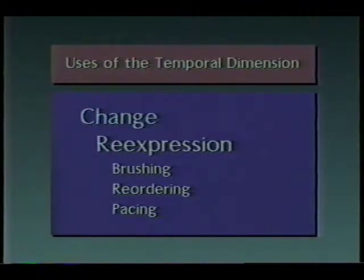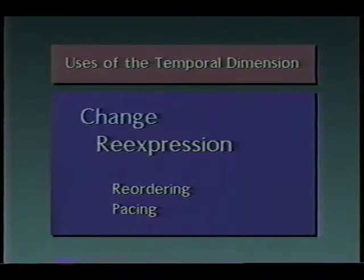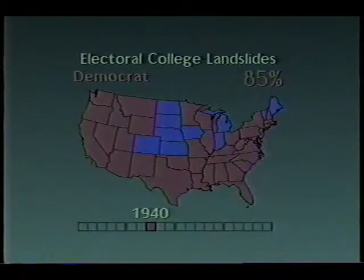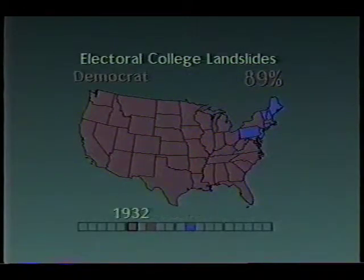Elsewhere, we show how animation introduces three dynamic variables which supplement the visual variables cartographers use in the design of static maps. The dynamic variables are duration, rate of change, and order. The re-expression strategies we call reordering and pacing exploit these dynamic variables to provide alternative views of time series data sets.